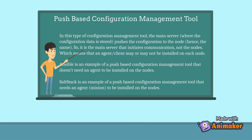In a Push-Based Configuration Management Tool, the main server — where the configuration data is stored — pushes the configuration to the nodes, hence the name. It is the main server that initiates communication, not the nodes. This means that an agent or client may or may not be installed on each node. Ansible is an example of a push-based configuration management tool that doesn't need an agent to be installed on the nodes.